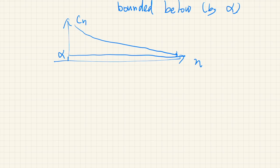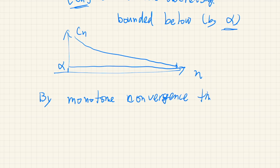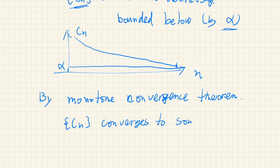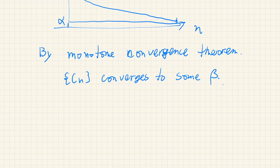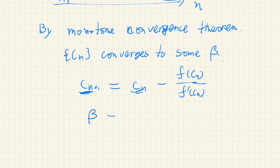We actually need to show that the converging value is alpha separately. By the monotone convergence theorem, Cn converges to some value — let's call it beta. If it converges, the value doesn't change anymore, so we should have beta equals beta minus f of beta over f prime of beta.